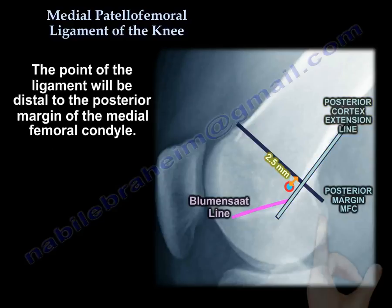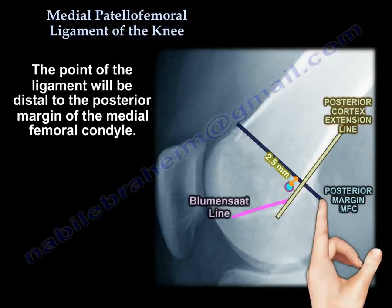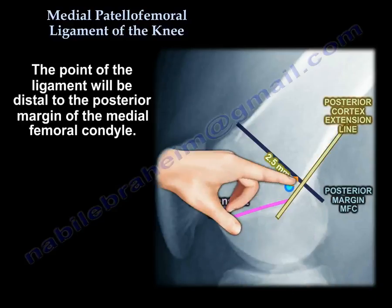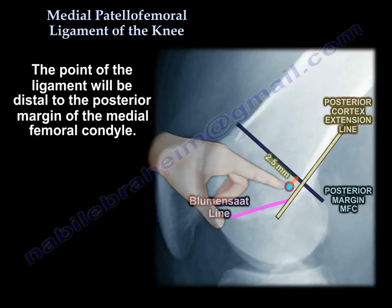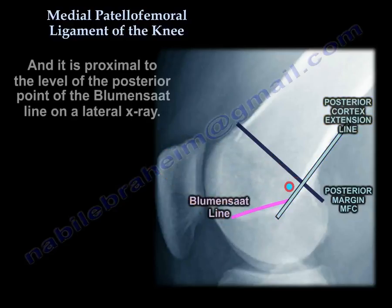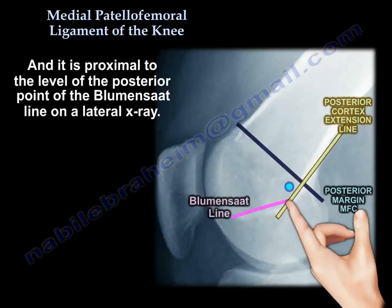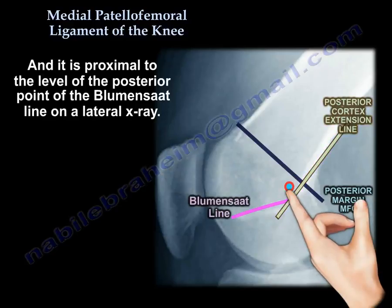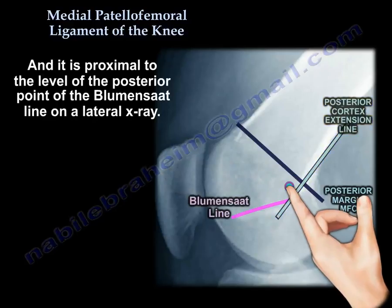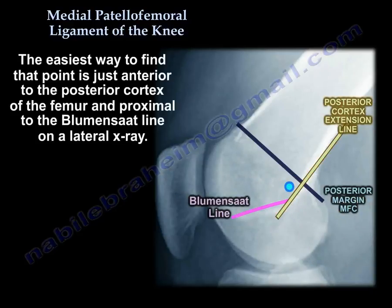This is the posterior margin of the medial femoral condyle, and the point of the ligament origin will be distal to that. It is also proximal to the level of the posterior point of the Blumensaat's line on a lateral x-ray. The easiest way to find that point is just anterior to the posterior cortex of the femur, and proximal to the Blumensaat's line on a lateral x-ray.